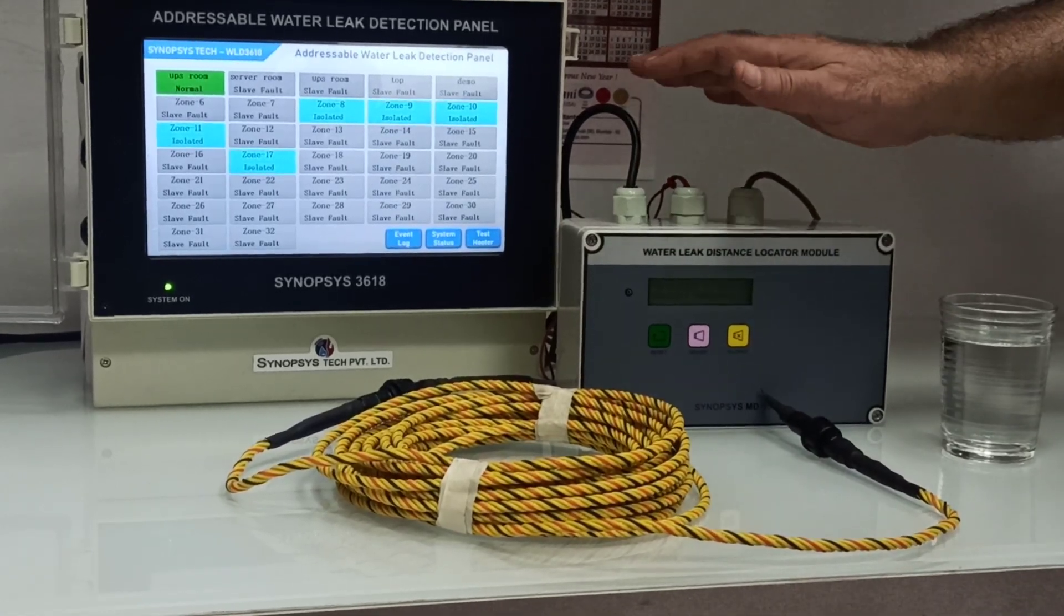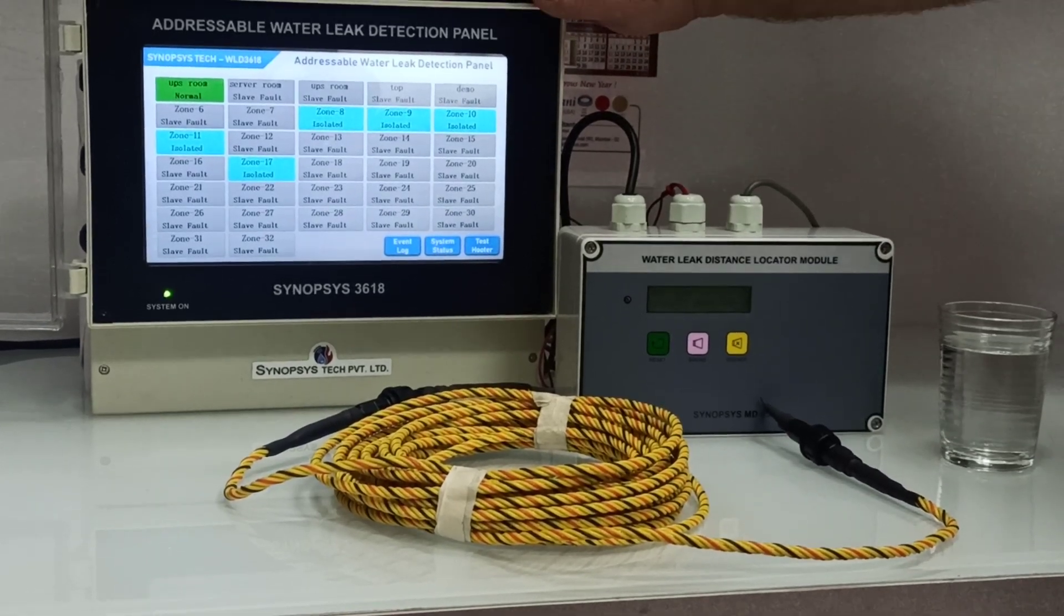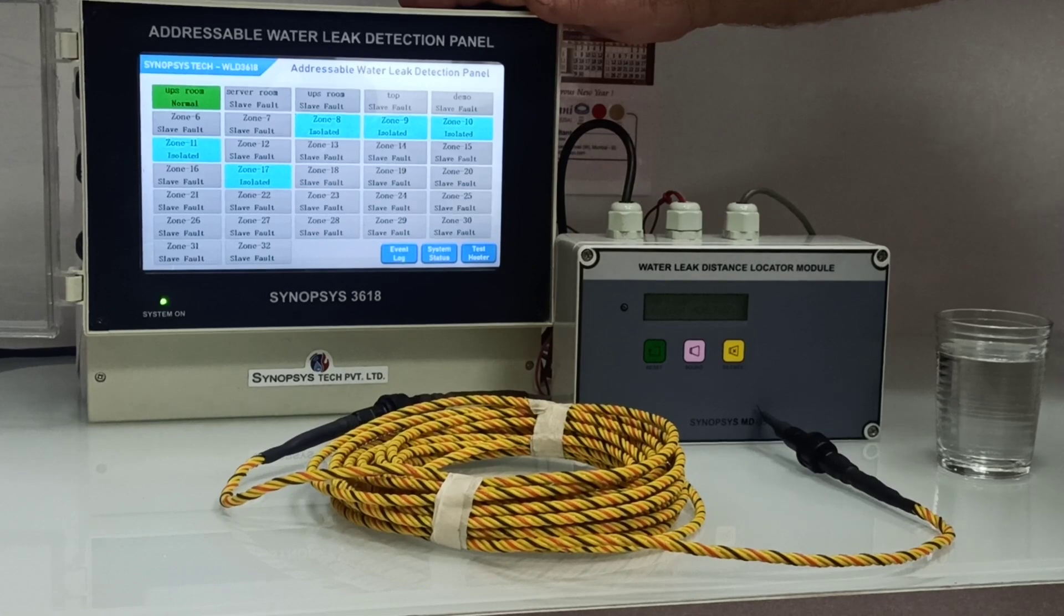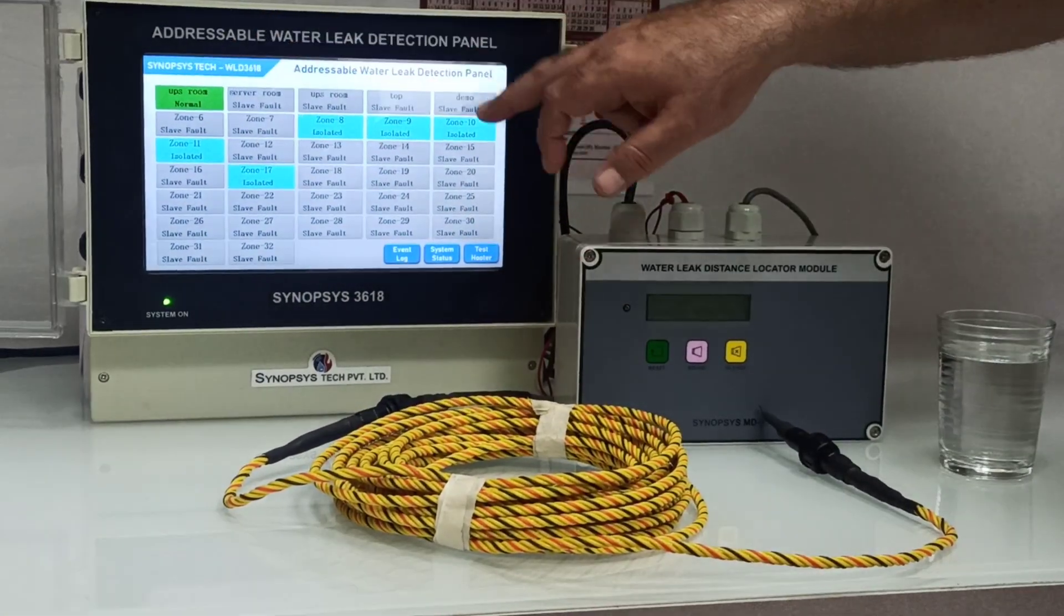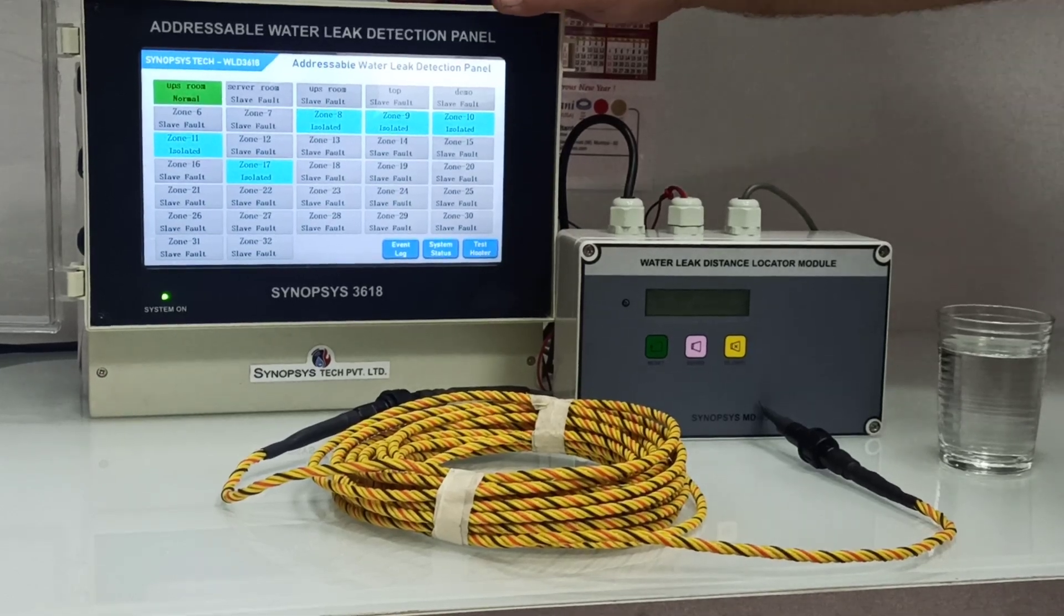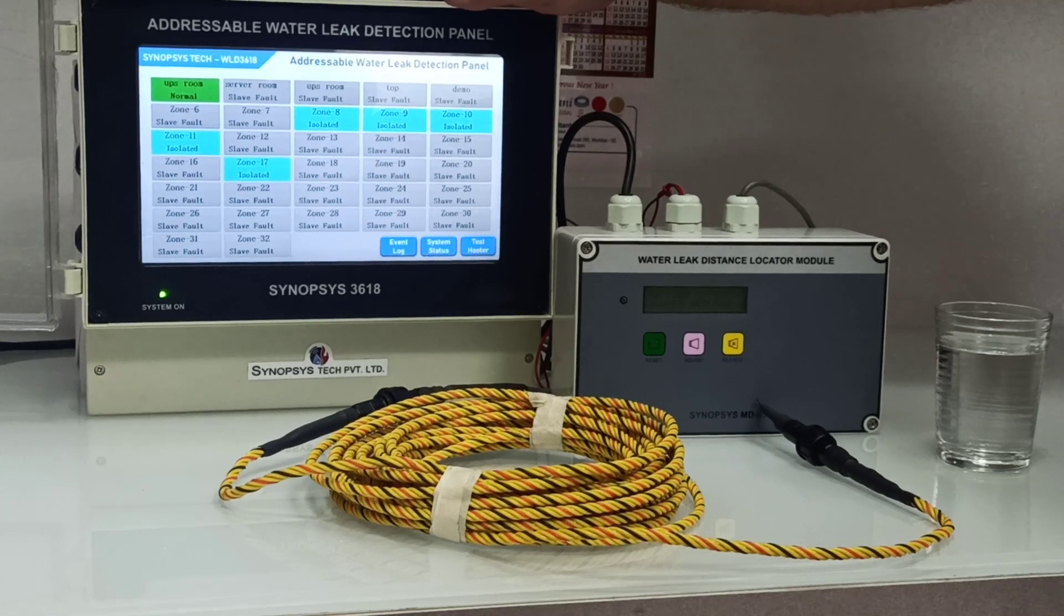This is the main touchscreen panel which has a 10.1 inch touchscreen display. It has a hooter output, a potential free relay output, as well as Modbus and BACnet output.